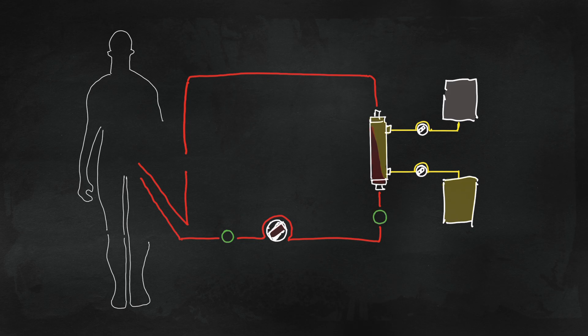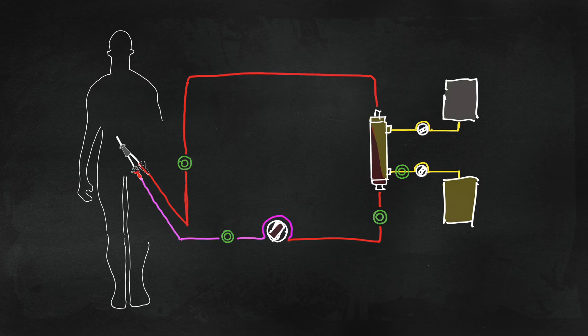Dialysis circuits will have pressure sensors to monitor circuit hemodynamics. On the bloodline, pressures are negative before the blood pump and positive after.